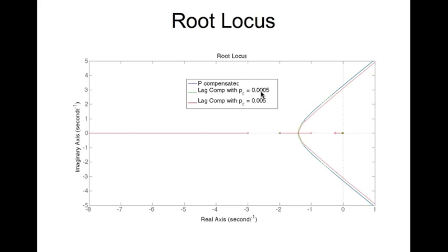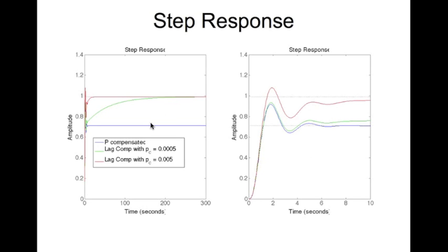And I looked at the step response of all three. So blue is the original step response, obviously with steady state error. The green is the step response with pc equal to 0.0005, and the red is lag compensated with 0.0005. So you notice that the red goes really fast to the desired output which is one unit step.